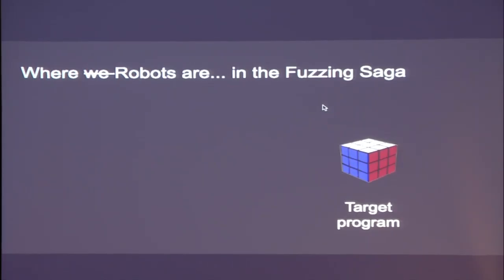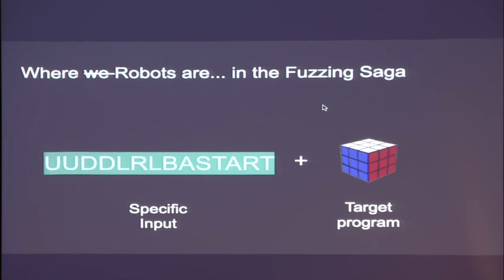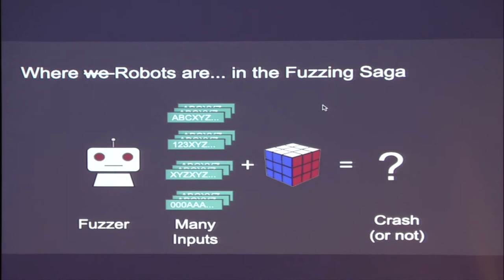If we're going to fuzz something, we start with the target program. Fuzzers don't know what the program is — it could be anything. We just know it takes arbitrary input. The idea is we can send arbitrary input to the program, and this program may or may not work on that input, but we just want to make sure it doesn't do something bad. With a fuzzer — depicted as the robot — it's just generating a lot of randomized inputs, sending them to the program, and watching to see if it crashes. This is what we'd call dumb fuzzing.